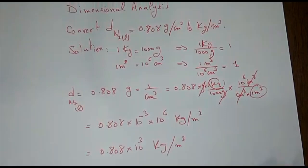In summary, if you are given any density value in grams per centimeter cubed, all you have to do is multiply it by 1,000 and it will become kilograms per meter cubed.